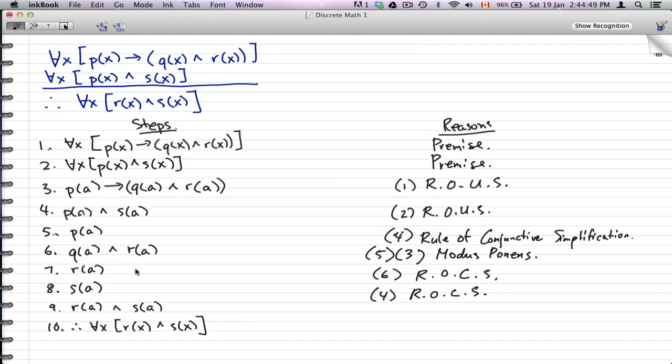So for the ninth step, r(a) and s(a), we're going to use seven and eight and the rule of conjunction, which is different from the conjunctive simplification—rule of conjunction.